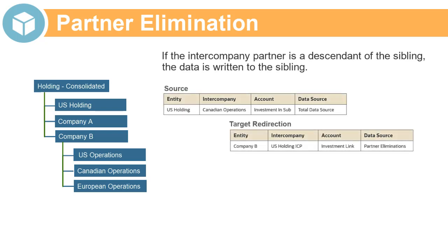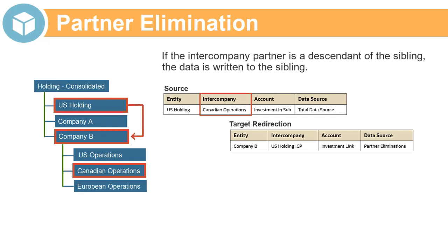In this example, U.S. Holding and Company B are siblings, and Canadian Operations is a descendant of Company B. In the data record being consolidated for U.S. Holding, Canadian Operations is the intercompany partner. In this case, the data is written to the sibling, Company B, as the target entity, rather than to its descendant, with U.S. Holding as the intercompany partner.